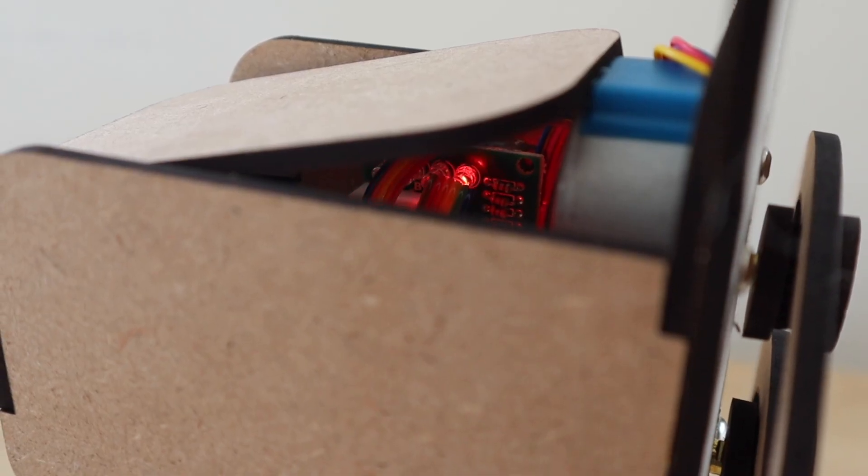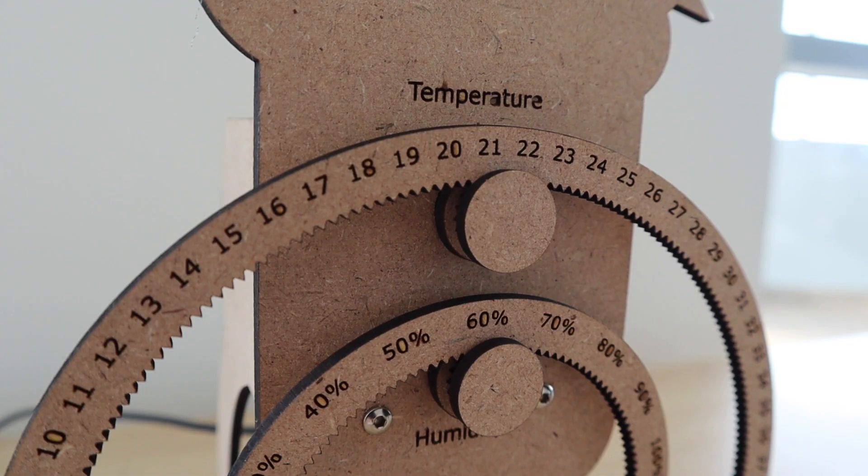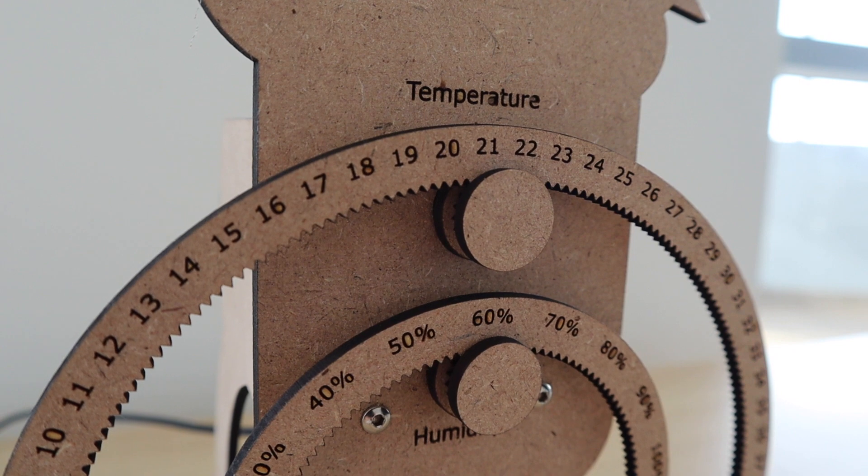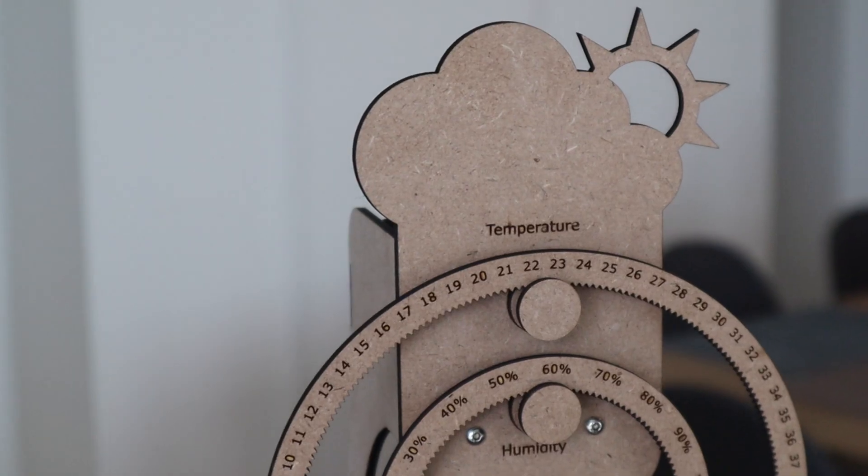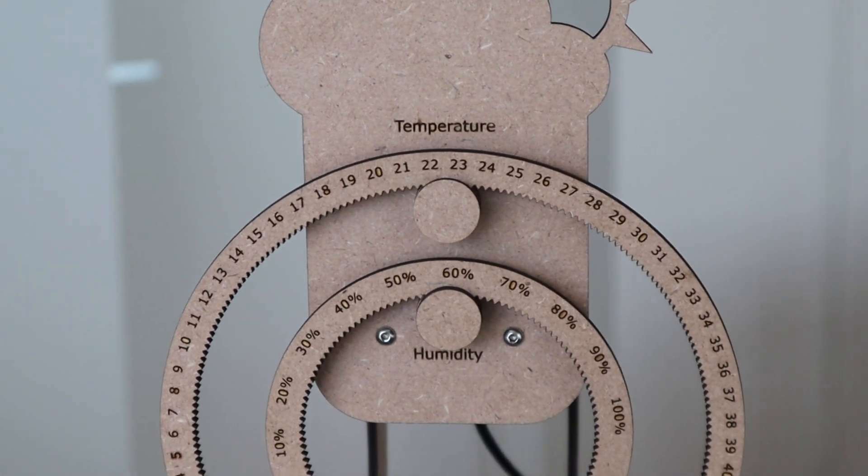If you notice your displayed values are not the same as those shown in the serial monitor, then first check your motor movement directions are correct. Then check that your initial values are correct, and finally you might need to make adjustments to the number of steps per degree or percent in order to calibrate your weather station.